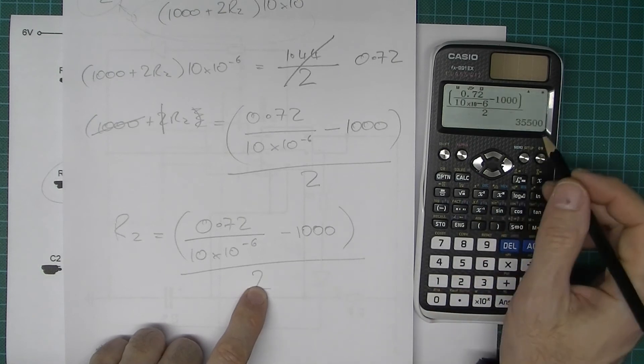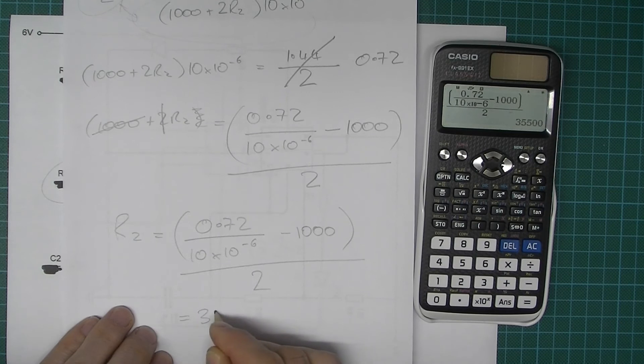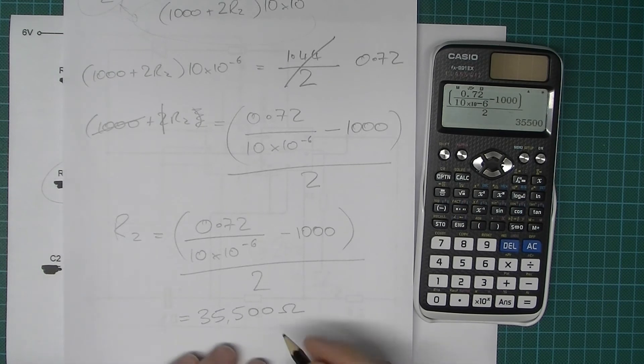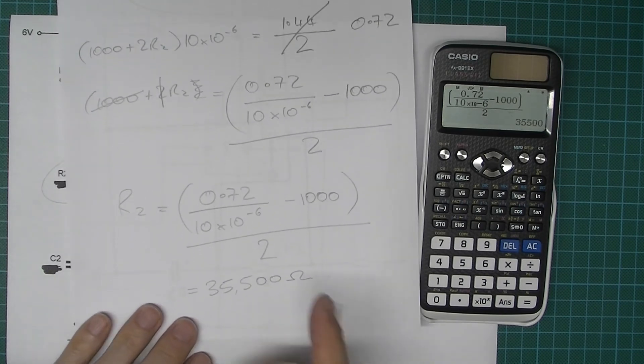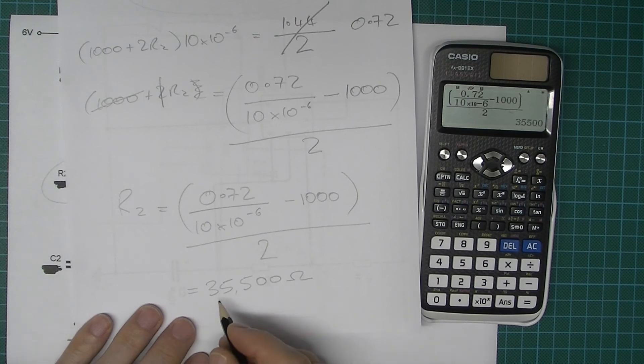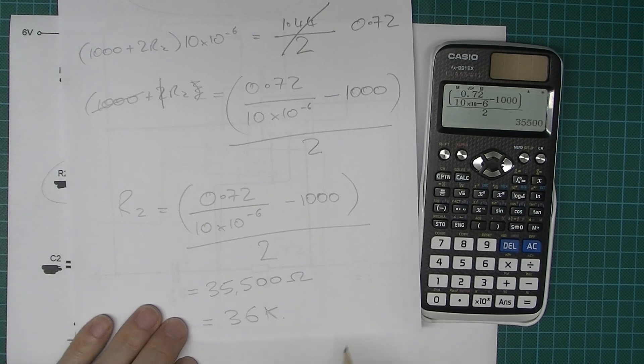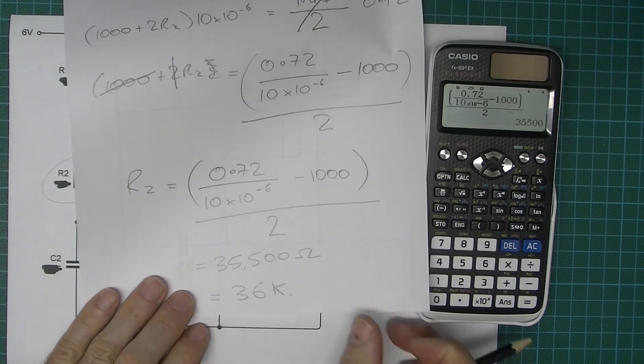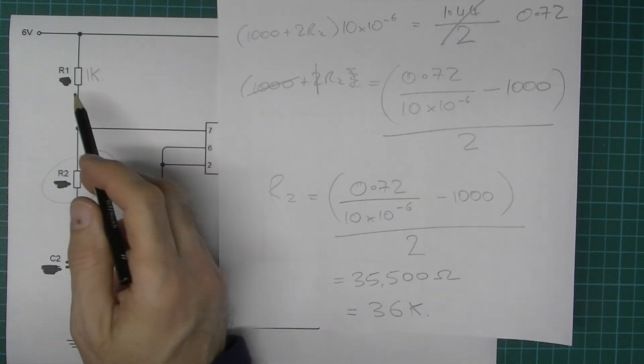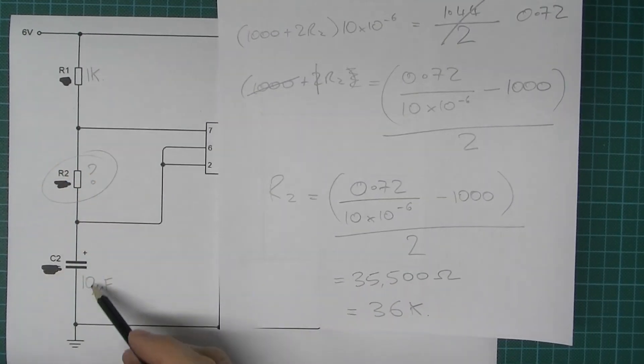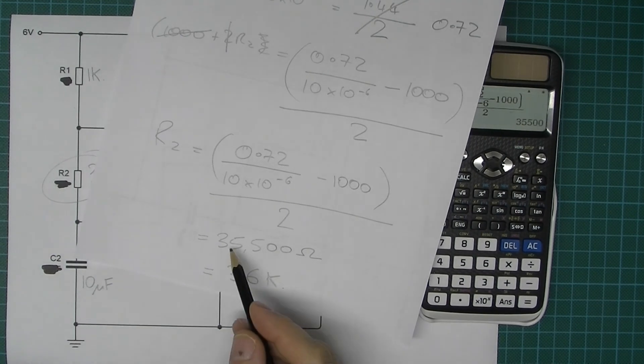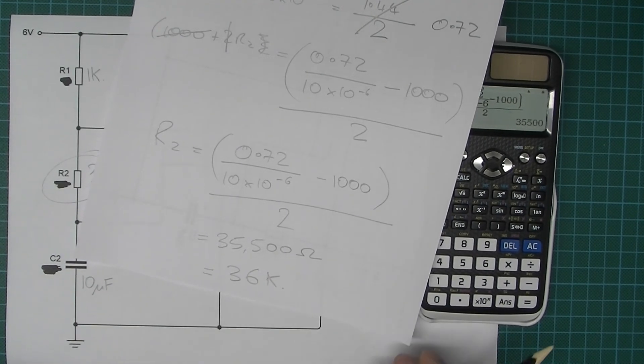And then I press equals and it gives me 35,500. That's ohms, remember. Okay, now if you were going to select a resistor, likelihood is you're not going to have one of that value. So in the E24 series the closest value would be, let me think, 36k, and that would be plenty close enough bearing in mind resistors have a tolerance value. So these ones are probably likely to be plus or minus five percent, not sure about the capacitor, it might be even plus minus 20 percent. So the difference between 35,500 and 36,000 is not going to be significant.